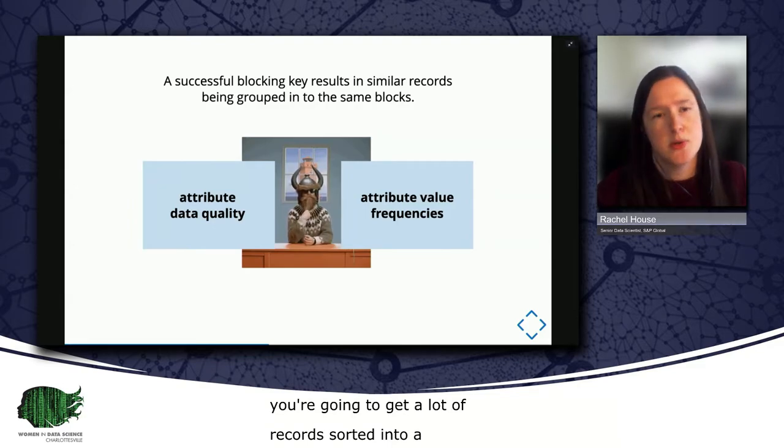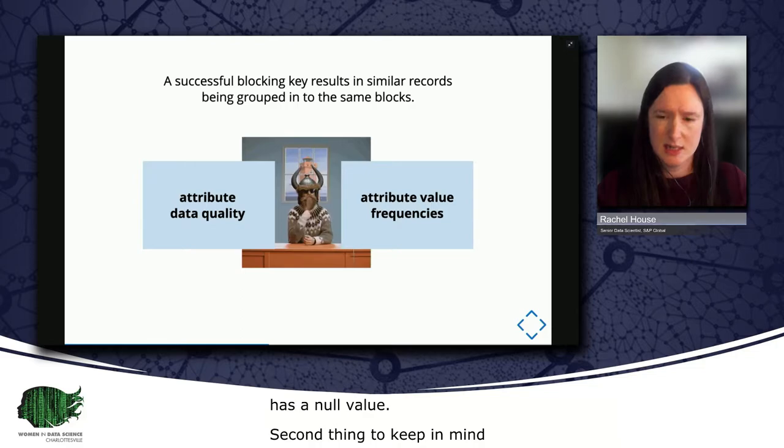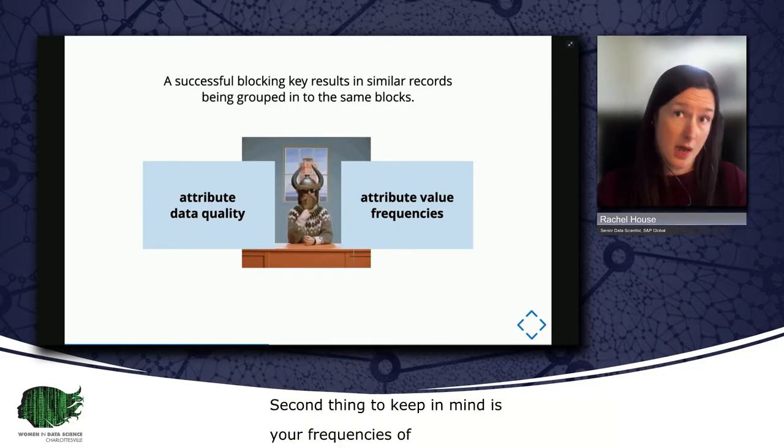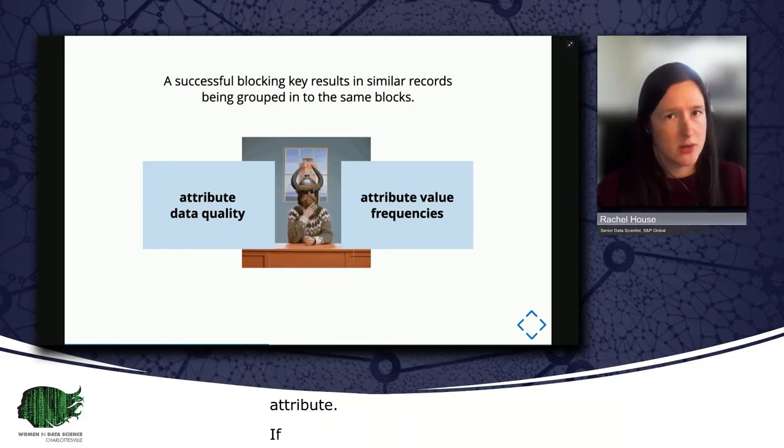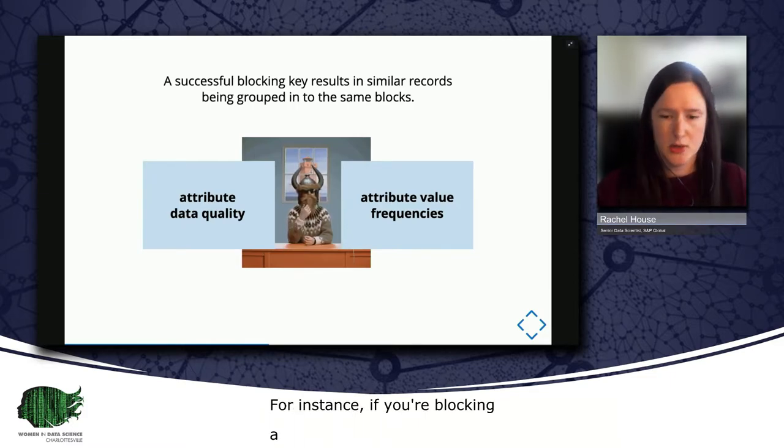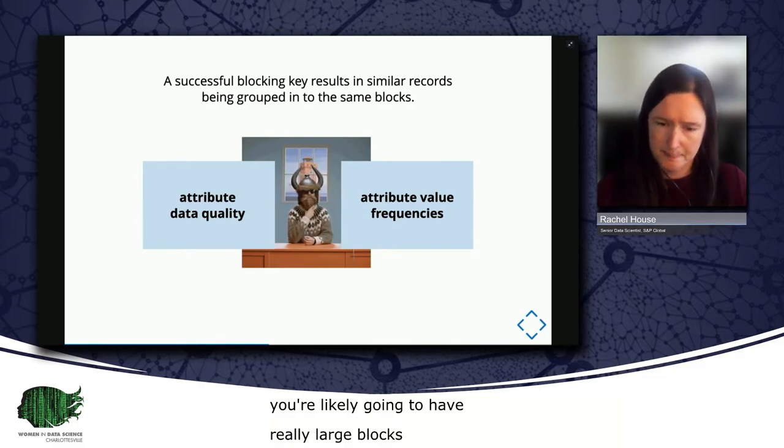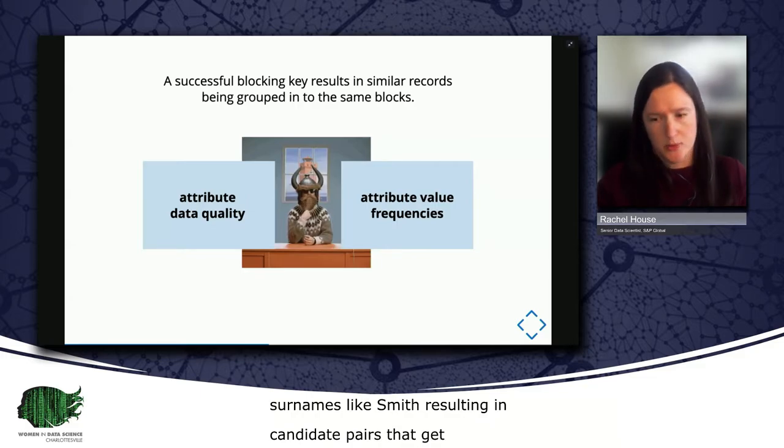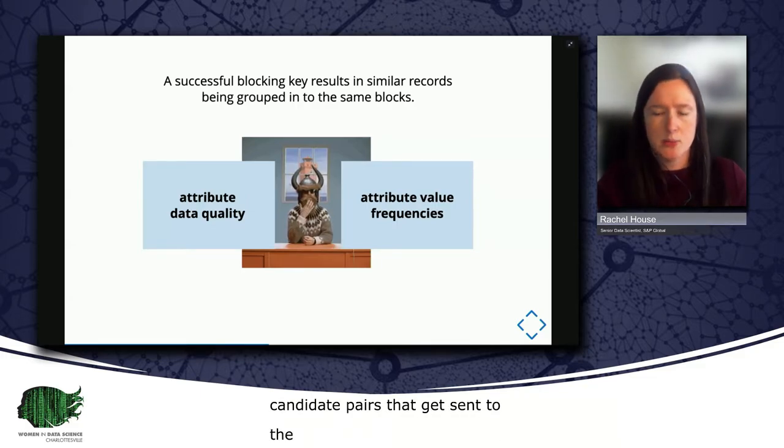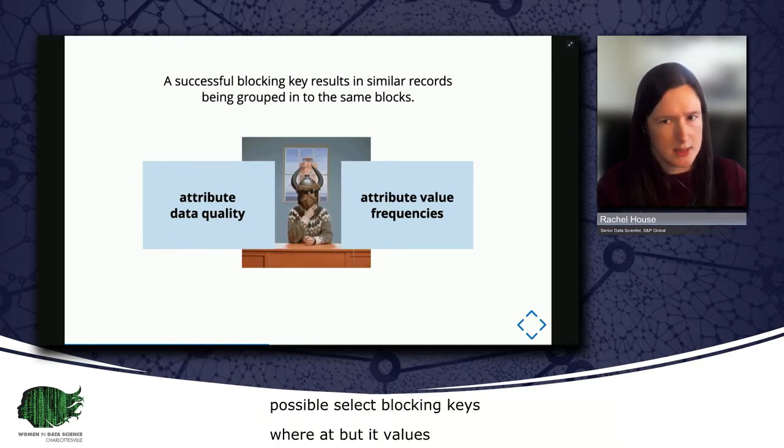Second thing to keep in mind is your attribute value frequencies, meaning the distribution of the values contained within the attribute. If you have a really skewed frequency distribution, the most frequent attribute values are going to dominate the record pairs that you generate by blocking. For instance, if you're blocking a people dataset on surname, you're likely going to have really large blocks for common surnames, like Smith, resulting in a lot of candidate pairs that get sent to the comparison step. The advice is generally, when possible, select blocking keys where attribute values have a frequency distribution close to the uniform distribution, which will give you more or less equal-sized blocks.